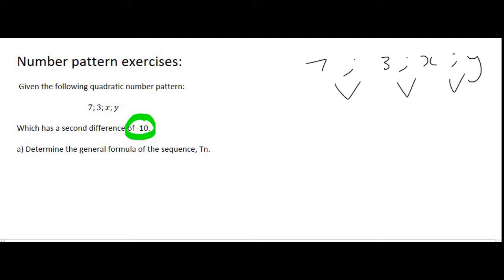Remember when working out the difference between two terms, it's always the number on the right minus the one on the left. So, that will be 3 minus 7, which is minus 4.